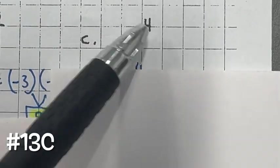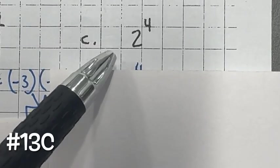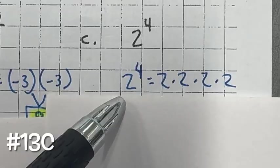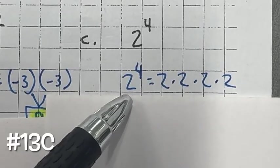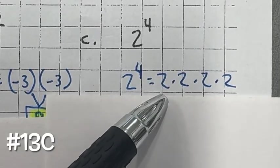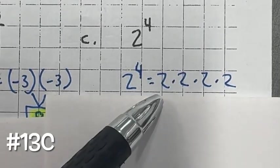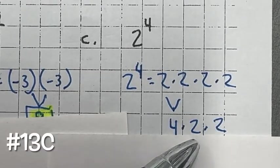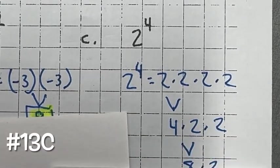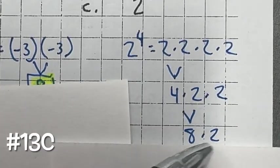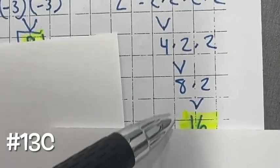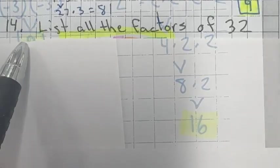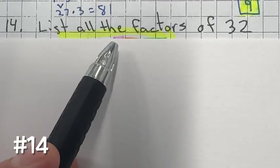For 13c, two to the fourth power — the base is two and the exponent is four, so we're multiplying two by itself four times: two times two times two times two. Two times two is four, four times two is eight, and eight times two is 16.